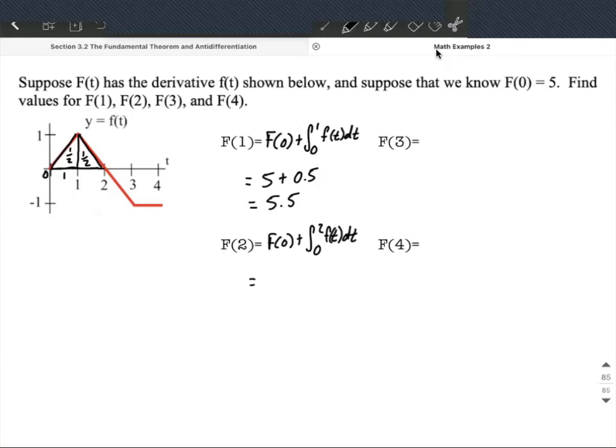Starting from 5, we add 1/2 plus 1/2. Both are positive because the areas are above the x-axis. So 5 + 1 = 6.